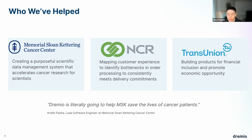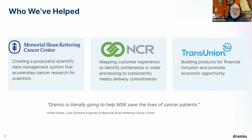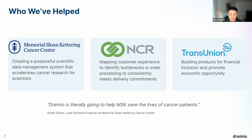NCR was able to map the customer experience, identify bottlenecks in order processing, and consistently meet delivery commitments. TransUnion built out products for financial inclusion — they created a data mesh culture and were able to extend credit to sectors like farmers who never had access to credit before. From MSK: 'Dremio is literally going to help MSK save the lives of cancer patients' — going beyond technical self-service, they're literally helping save lives.